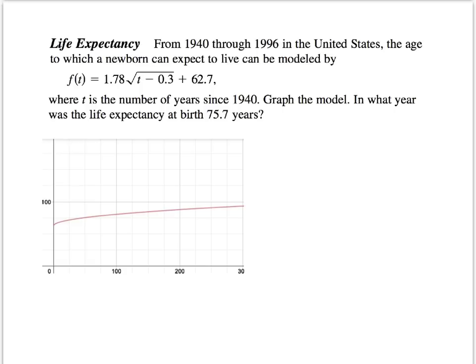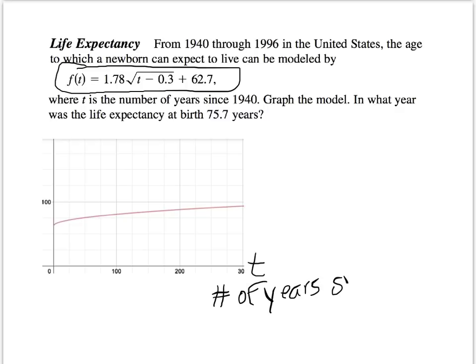In the following word problem, we are given a function for life expectancy. That function is f(t) equals 1.78 times the square root of t minus 0.3, plus 62.7, where t is the number of years since 1940. This function can be graphed in your calculator, giving you the graph shown here.